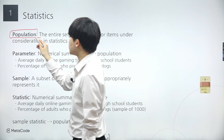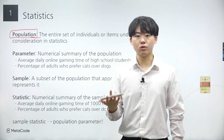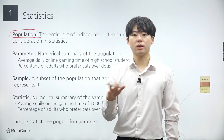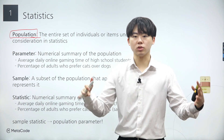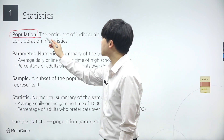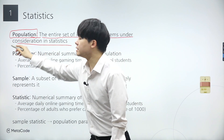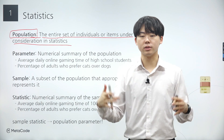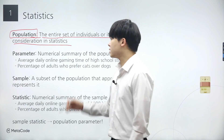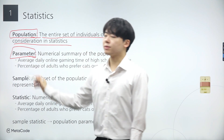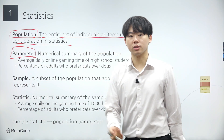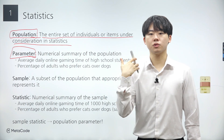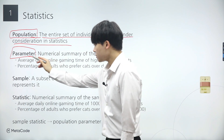A population represents the entire group that a researcher wants to draw conclusions about or generalize findings to. The concept of a population is foundational in statistical analysis as it forms the basis for making inferences and drawing conclusions. The definition of a population is the entire set of individuals, items, or events that are of interest to a researcher. Next, a parameter is a numerical characteristic that describes a population.